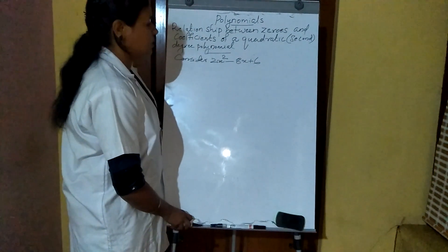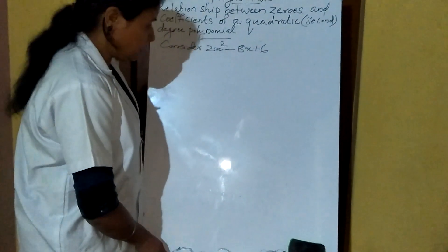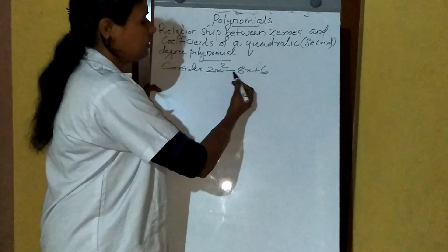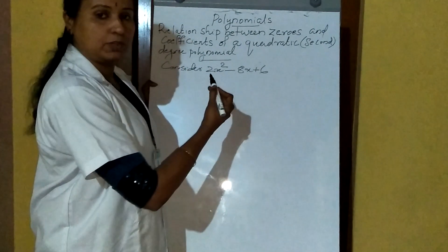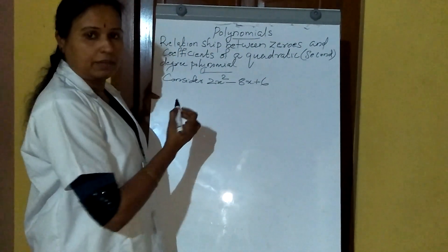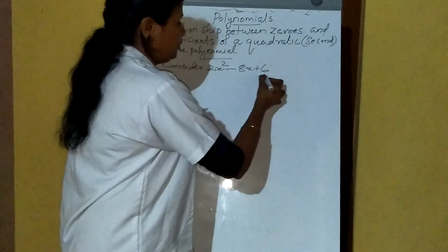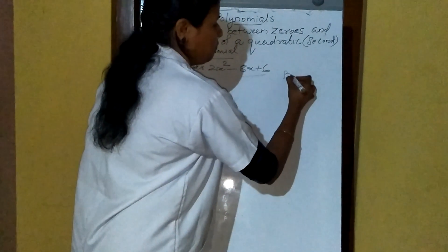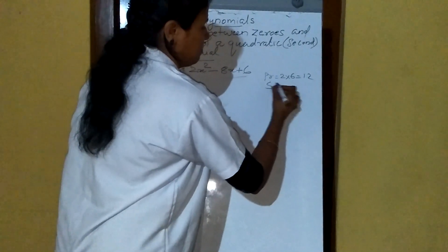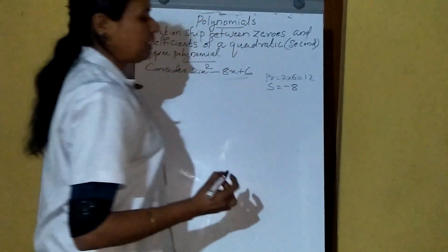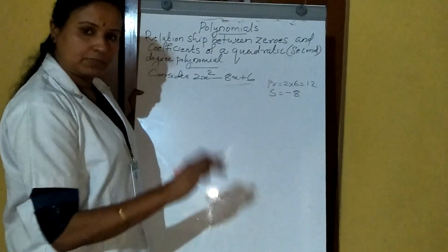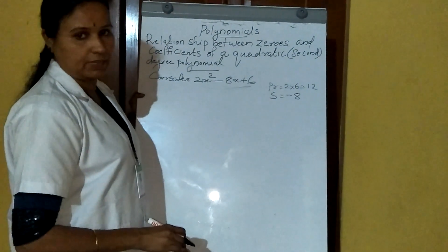We consider a quadratic polynomial 2x² minus 8x plus 6. To find the zeros, we use the method of splitting. For that, 2 times 6 — the product of two numbers is 12, and their sum is minus 8. We have to find two numbers whose product is 12 and at the same time sum is minus 8.